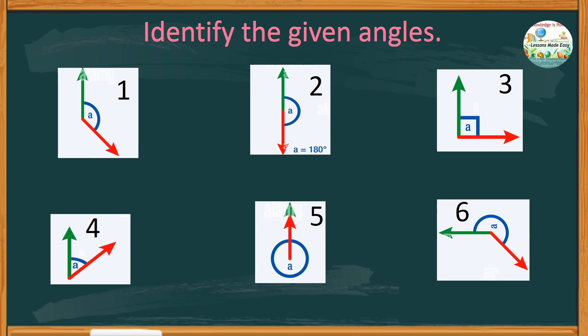Alright, shall we check our answers? The first angle is more than 90 degrees, therefore it is an obtuse angle. Figure 2: the angle is exactly 180 degrees, so this is a straight angle.